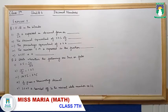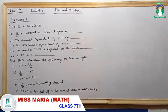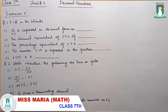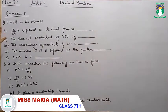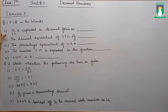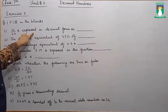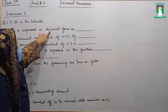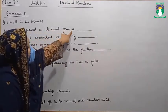Now students, we are going to start our exercise number 3. Here is question number 1, filling the blanks. For the first blank: 12 divided by 24 is to be expressed in decimal form.